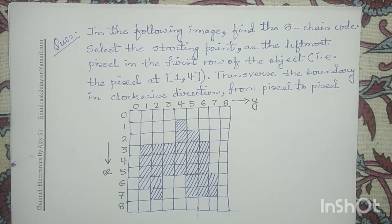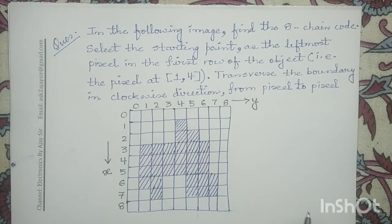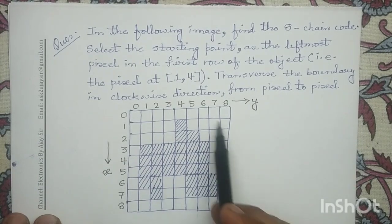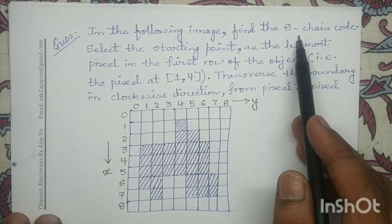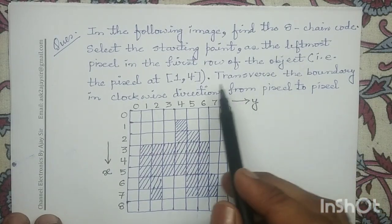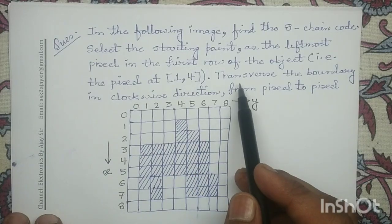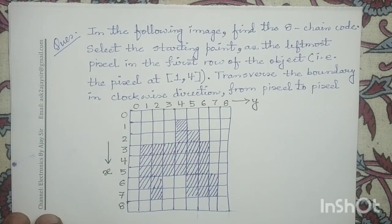Good morning all. Let us solve a numerical question on chain code. In this question, an input digital image is given to us. For this given object, we have to write the 8-directional chain code. The starting point we have to consider is 1,4 and we have to traverse the boundary along the clockwise direction. So let us solve this question.